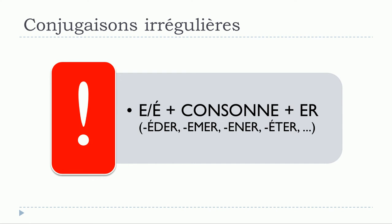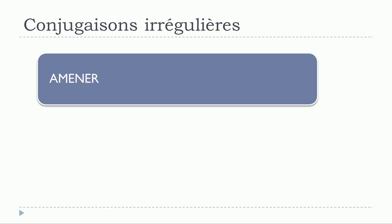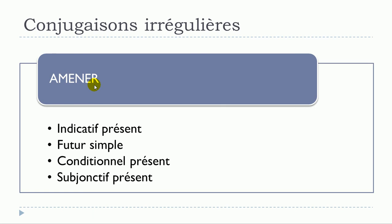Even if they are regular verbs, they will be affected and will have slight changes. I've taken 'amener' as the example — amener means 'to bring someone' — and the tenses that will have these slight changes are l'indicatif présent, le futur simple, le conditionnel présent, and le subjonctif présent.